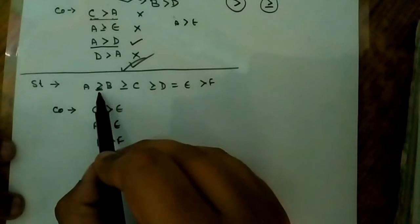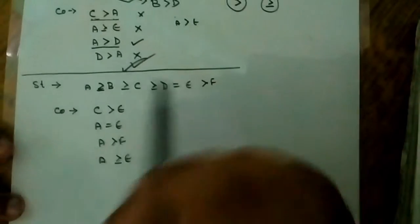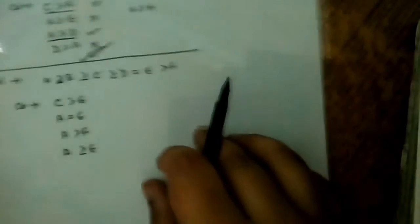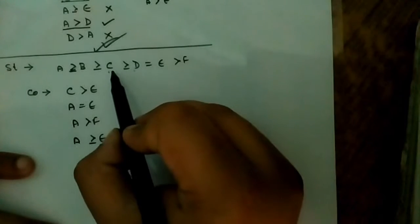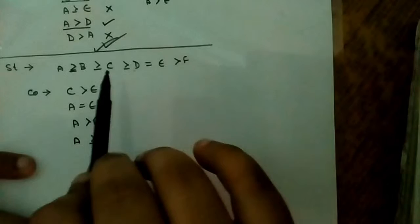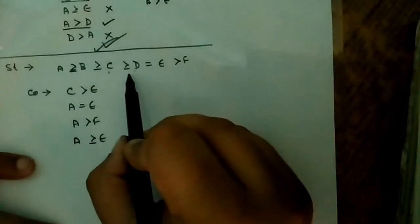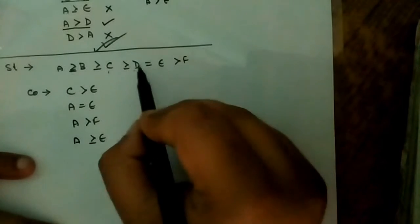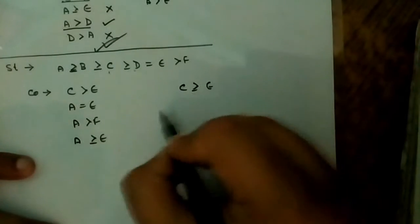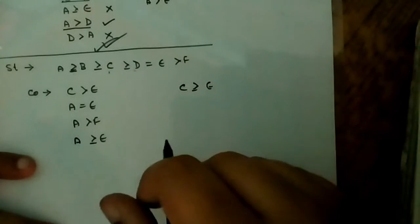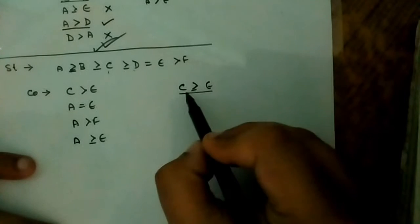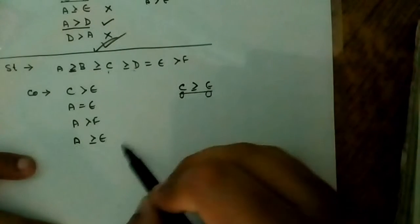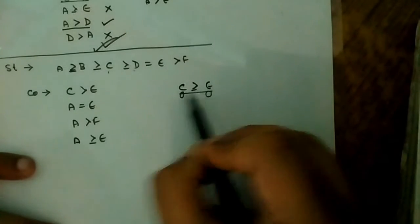Now the second statement: a >= b >= c >= d = e > f. The first conclusion is c > e. We know c >= d and d = e, so c >= e. Since d equals e, we cannot say c > e definitively — it may be greater than or equal to. Therefore c > e is false.